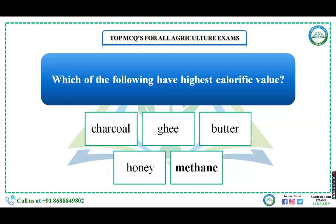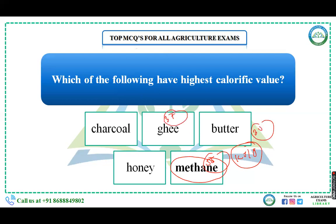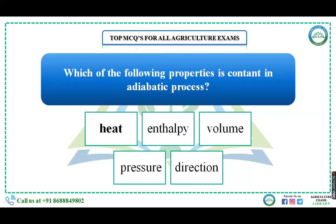Now a few chemistry questions. Which of the following has the highest calorific value — charcoal, ghee, butter, honey, or methane? In kilojoules per gram: methane is nearly 55, ghee is nearly 37, charcoal is nearly 33, butter is nearly 30, and honey is nearly 13. So the highest calorific value belongs to methane, which is the correct answer.